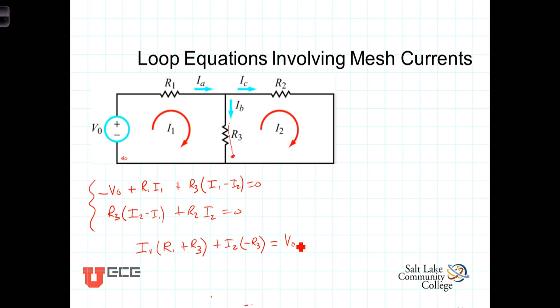The second equation will similarly factor out I1, and when we do so we've got a negative R3. Now working with I2, we have R2 plus R3. The sum of those terms has to equal zero. So we have two equations, two unknowns. If we knew what R1, R2, and R3 and V0 were, we could plug in those values and would be able to solve for I1 and I2. Given those two values, we could then go back and calculate any branch voltage or branch current that we were interested in in this circuit.